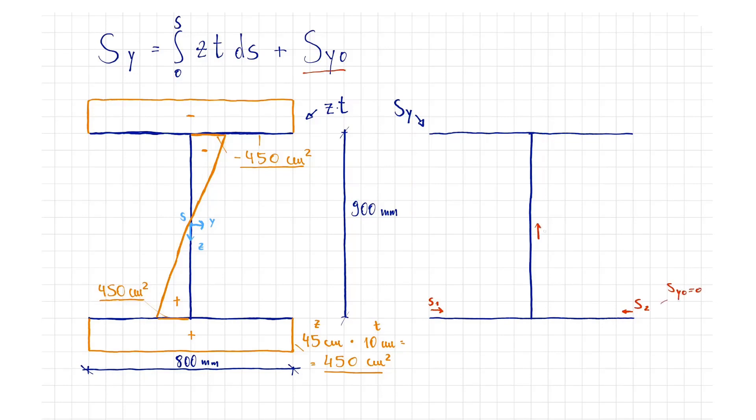Furthermore, we can calculate the integrals. They are nothing more than the surface of the Zt distribution. For Sy of S1 equal to 40 centimeters to the right, the area is 450 by 40 square centimeters.